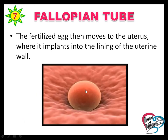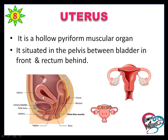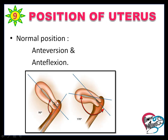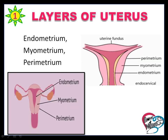The fertilized egg then moves to the uterus, where it is implanted in the lining of the uterine wall. The uterus is the hollow pear-shaped muscular organ, situated in the pelvis between the bladder in front and the rectum behind. The normal position of the uterus is anteversion and anteflexion. Measurement: 8 cm length and 5 cm width at the fundus. The thickness of the wall is about 1.25 cm, and the weight is 50 to 80 grams. Layers of the uterus are endometrium, myometrium, and perimetrium.